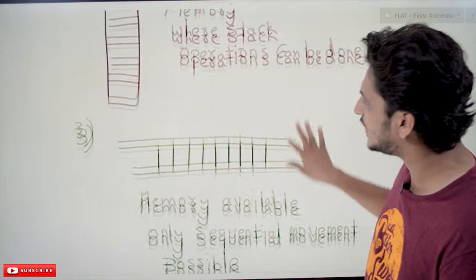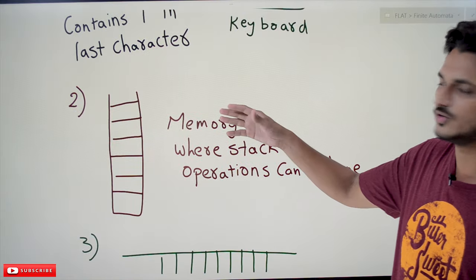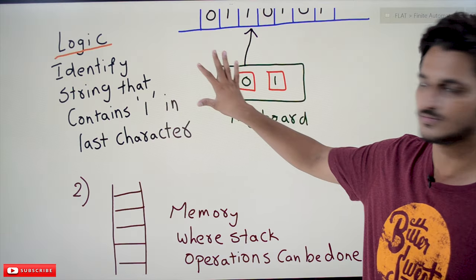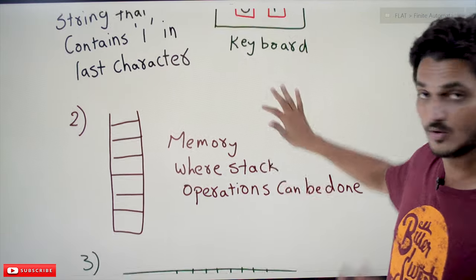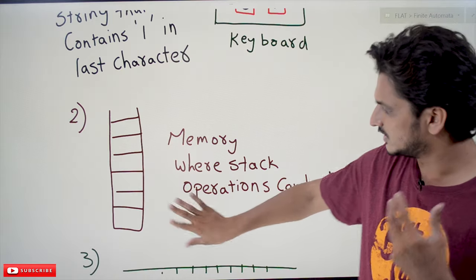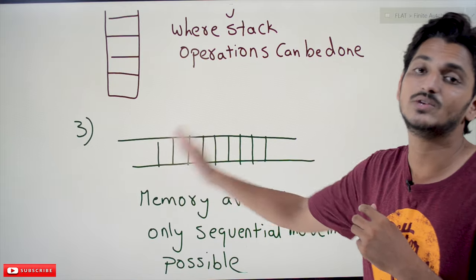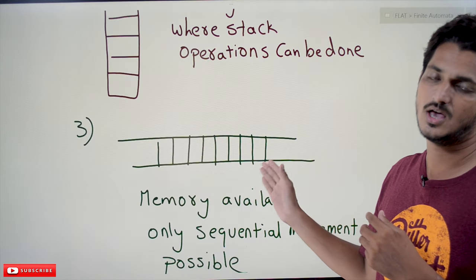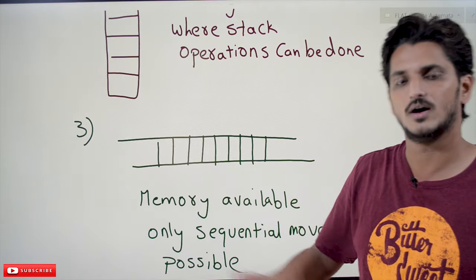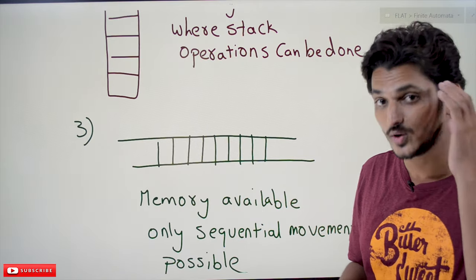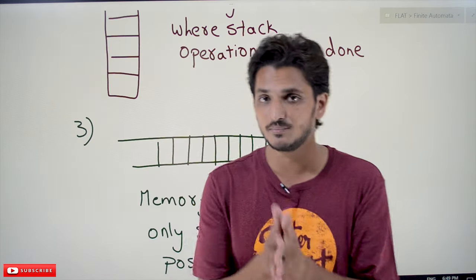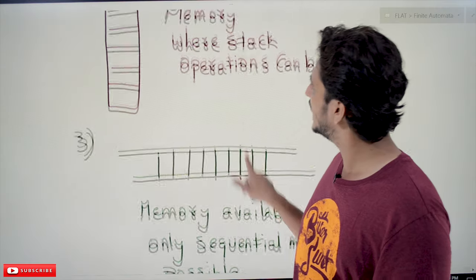So these are the three parts we are going to cover. First: identify logics without memory. Second: think about logics if you have stack memory — push and pop. Third: if you have sequential one-step access, how do we do computations and write logics? That is what we have to think about across these three parts.